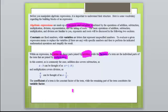In this context, as is commonly the case, addition also covers subtraction. a minus b can be thought of as a plus negative b. And multiplication covers division, as a over b can be thought of as a times one over b. These are two really important things to know right here. The coefficient of a term is the constant factor of the term, while the remaining part of the term constitutes the variable factor. So if you were to have something like 2x, 2 would be your coefficient and x would be the variable.